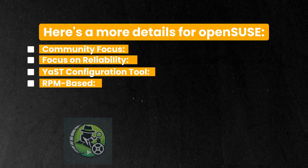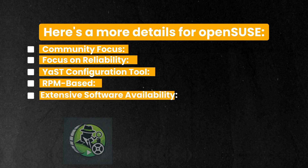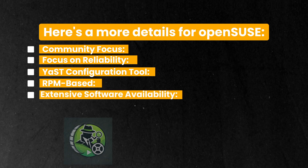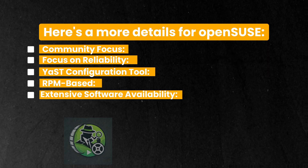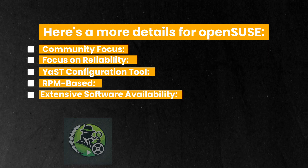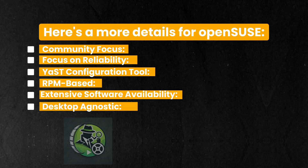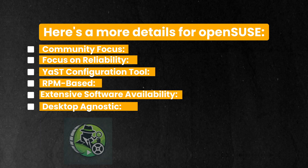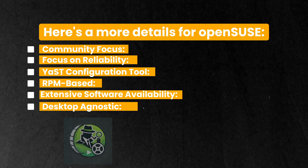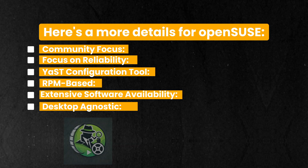What sets OpenSUSE apart from the rest is the YAST configuration tool. YAST is Yet Another Systems Tool for systems configuration management and administration. It is an RPM-based package management system — RPM is Red Hat Package Manager. There's extensive software availability through the OpenBuild Services and its repository, also called OBS. OpenSUSE is also desktop agnostic, meaning you can use GNOME, KDE, XFCE, and others.